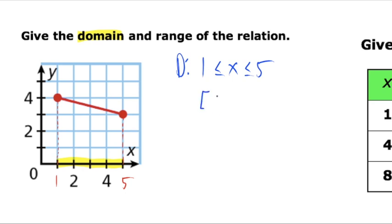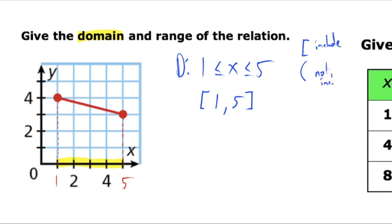Another way of writing it is to use bracket notation: a hard bracket, your starting point, comma, your endpoint, and a hard bracket at the end. The difference between a hard bracket and a soft bracket is whether or not the point is included — hard brackets mean included, soft brackets mean not included. Hard brackets correspond to solid dots and soft brackets correspond to open circles.